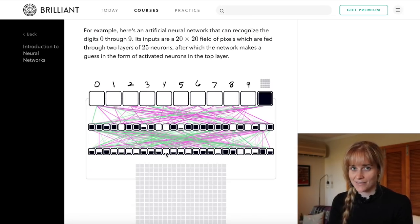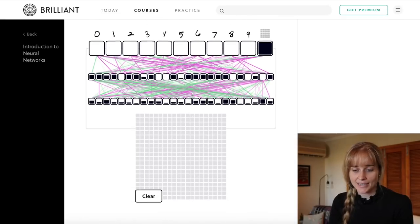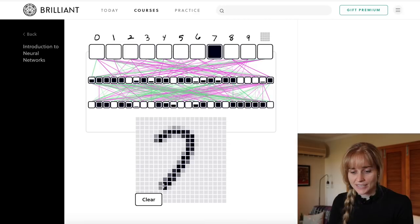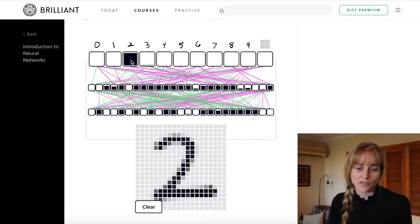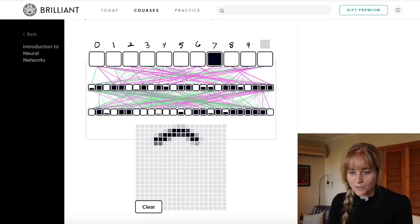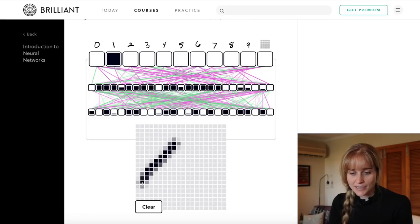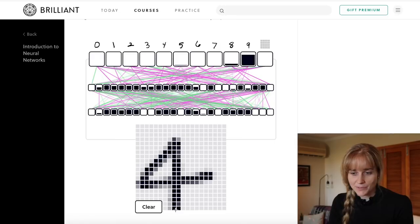In this little example here we have an artificial network that can recognize the numbers 0 through 9. So we can draw something down here and hopefully this neuron up here corresponding to 2 will be quite filled, quite activated, and that will indicate that it knows that it's a 2. You can see that it's never completely binary, so as we go on there are elements of activation in many of these neurons in the top layer, but it seems to be doing a pretty good job at recognizing which number I'm drawing.